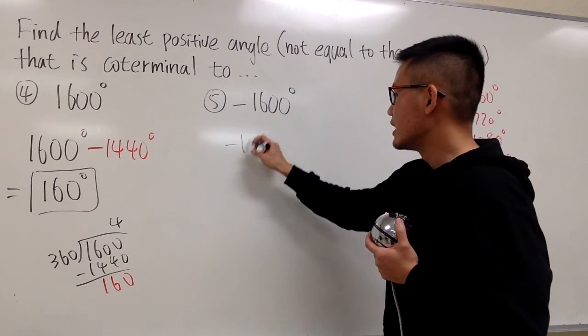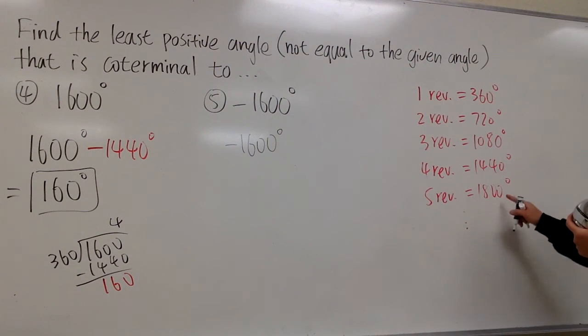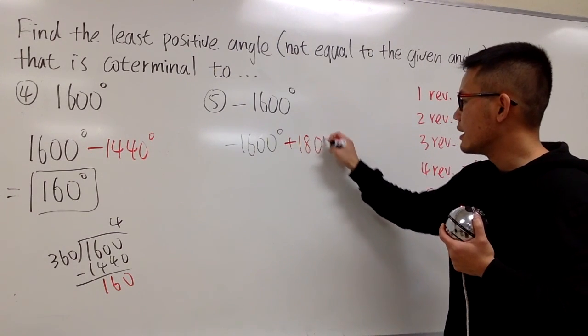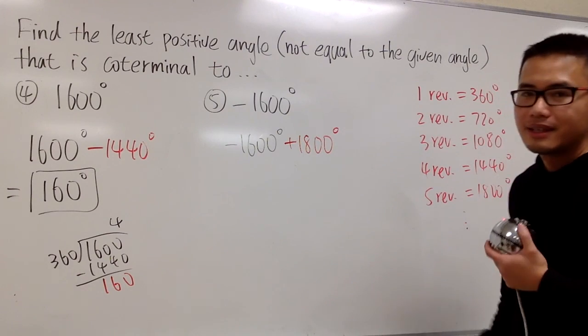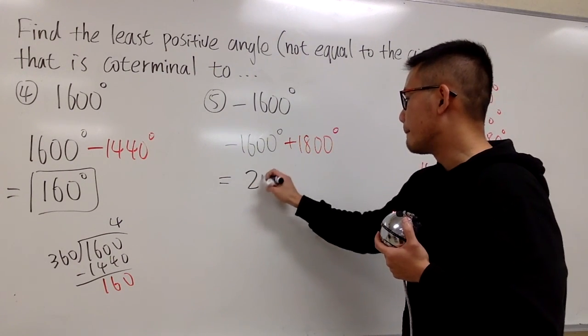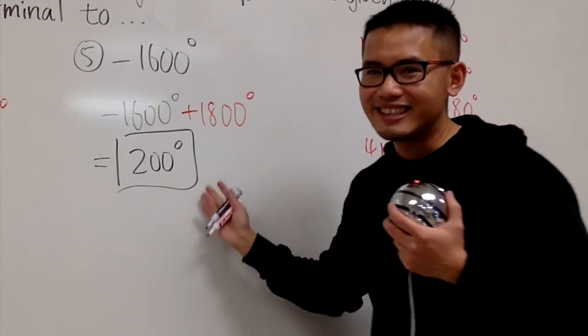Let me write this down. Negative 1600 degrees. I compare this with that. I'm just going to add it with 1800 degrees. And once you finish the math right here, just add them up. You get positive 200 degrees. And you are done. That's it.